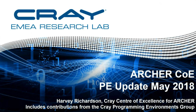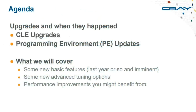Welcome to this webinar. I'm Harvey Richardson, I work for the Archer Centre of Excellence. The idea of this talk is to discuss software updates on the Archer system. There are two kinds of updates: a brief introduction to operating system updates, and then the main focus on the programming environment — compilers, MPI, libraries — covering new features, performance improvements, and new standards like OpenMP 4.5.